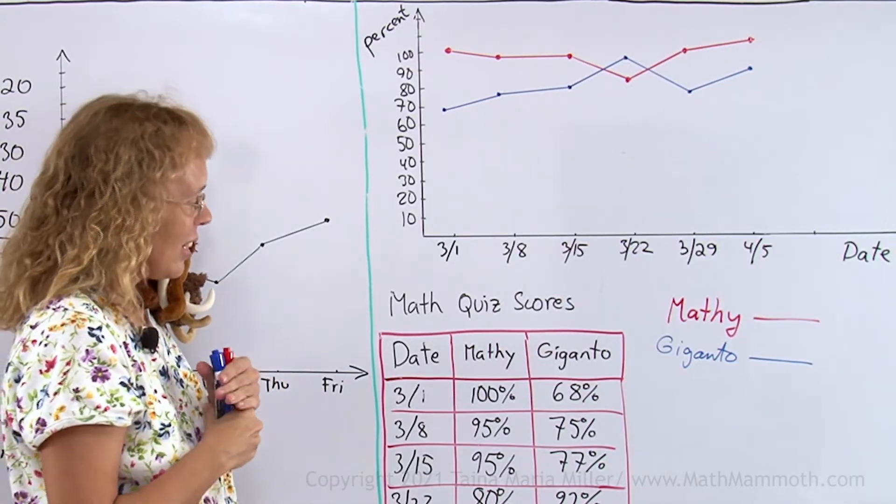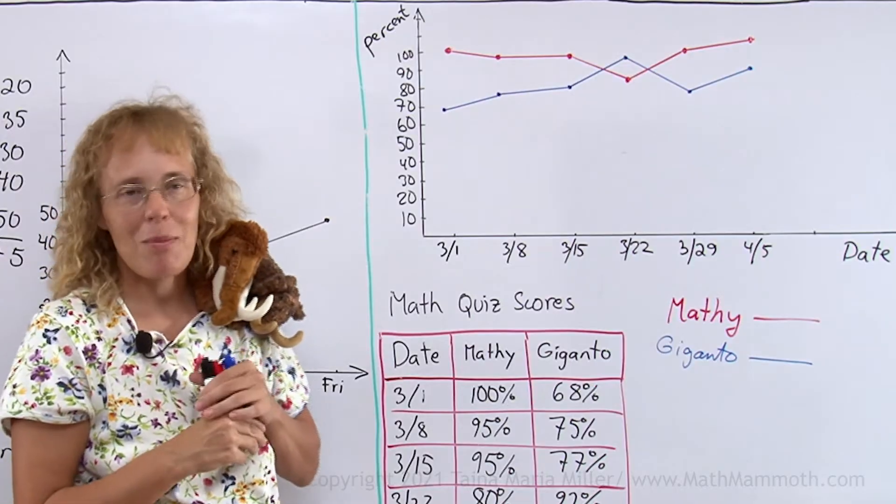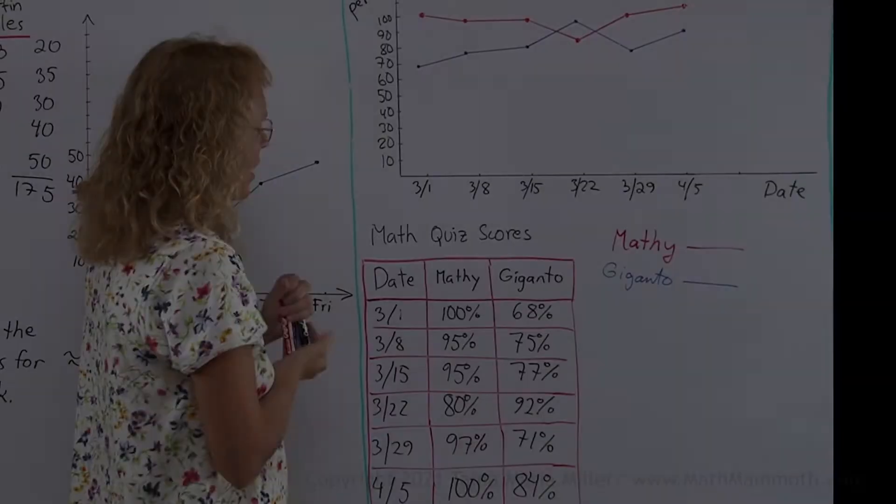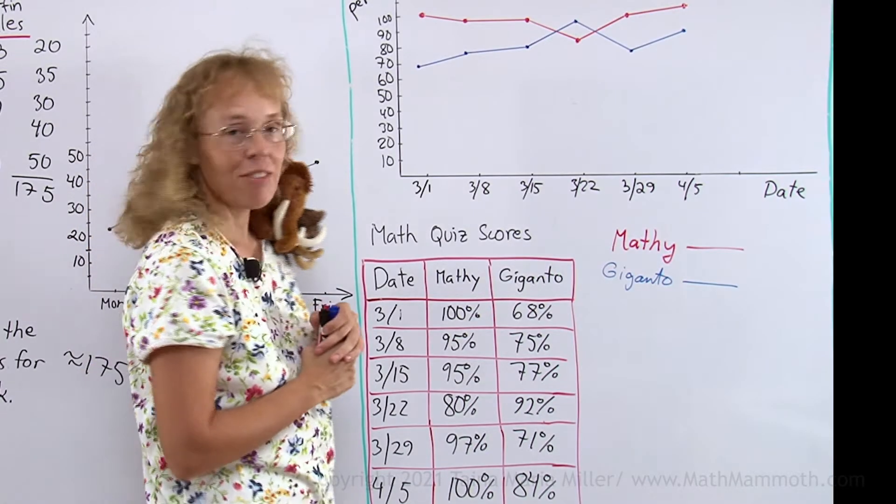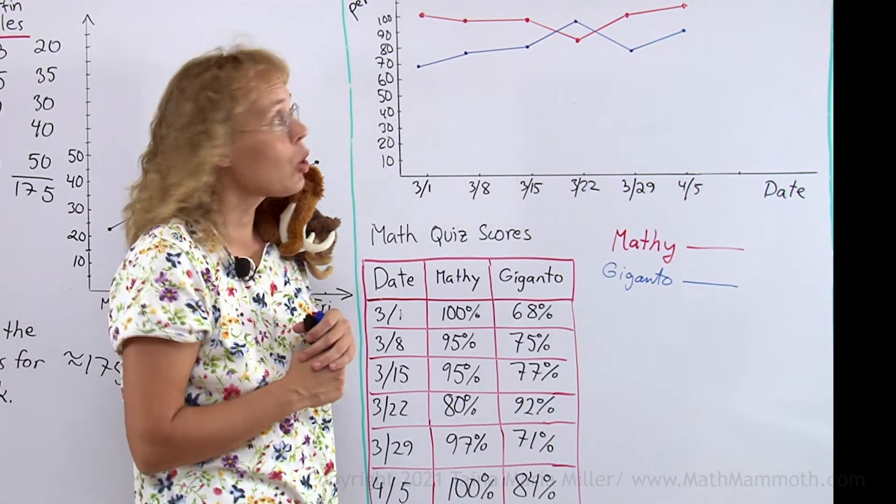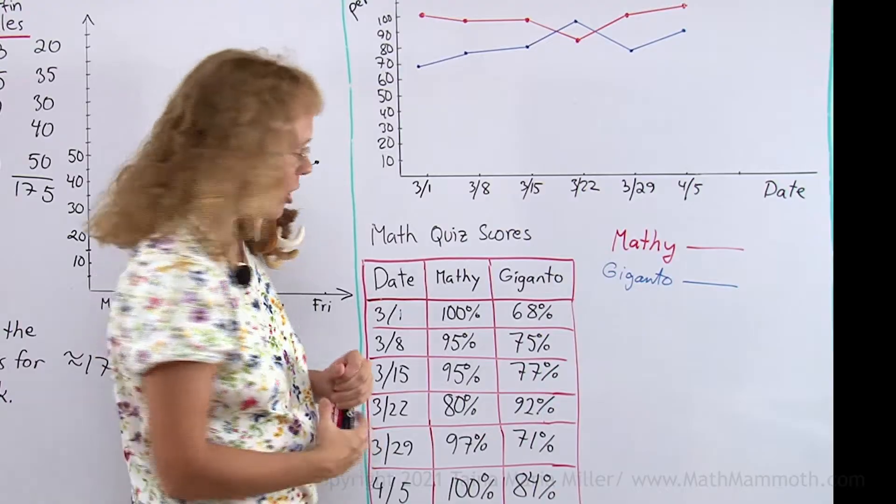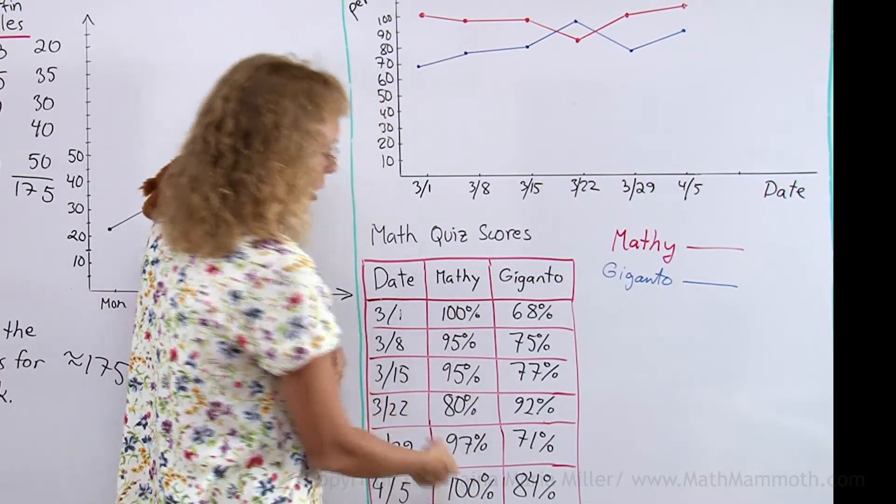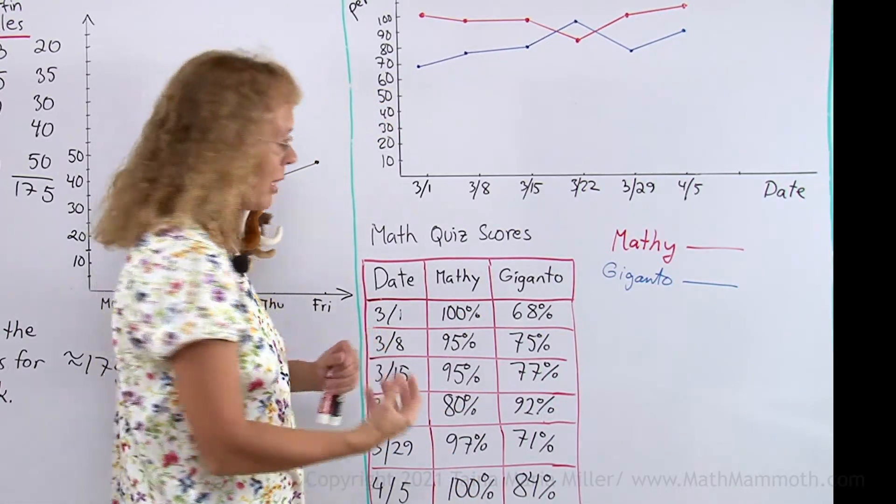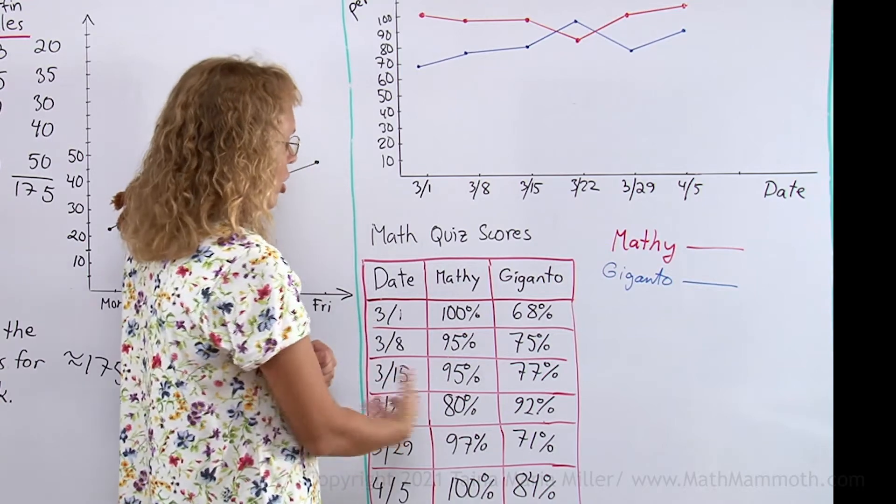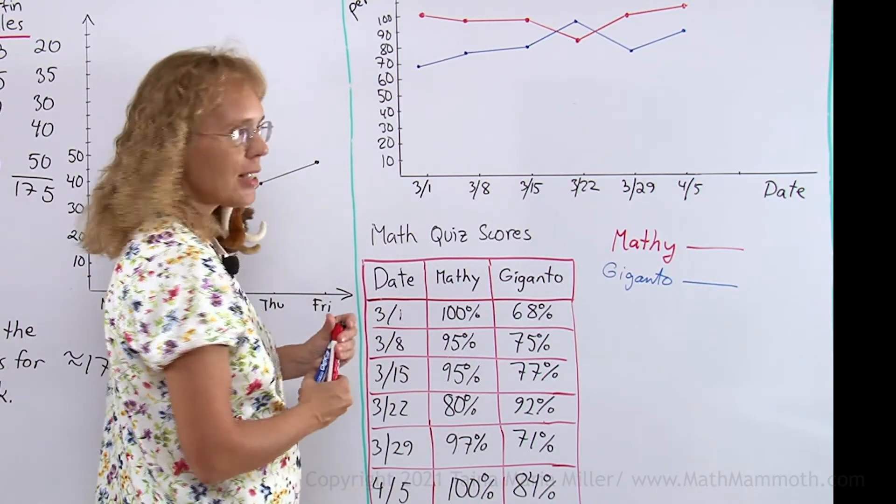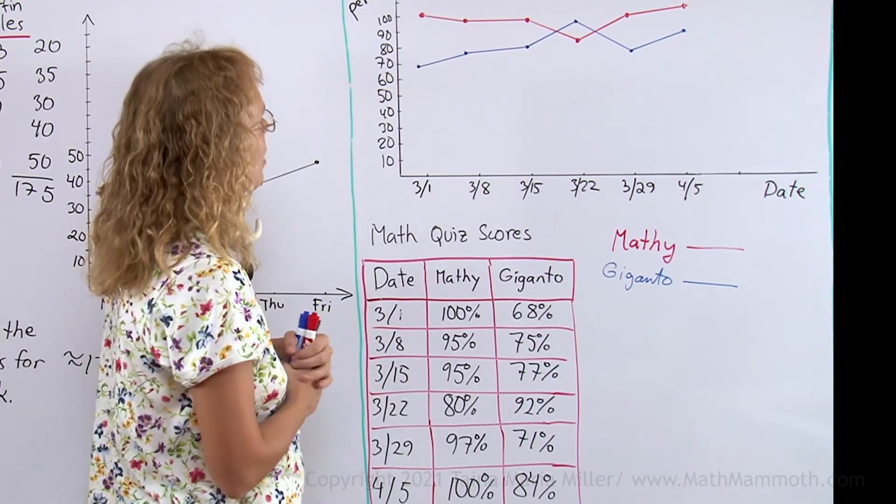Okay. And Mathie kind of, Mathie is just the opposite, didn't study much and didn't do well. Now another thing we could study from this is calculate the average score. I'm not going to do it this time, but that's a typical math book question, to take all these numbers, add them up, and divide by however many there are, to get the average score. And we can be sure Mathie's average score is better than Giganto's in this case.